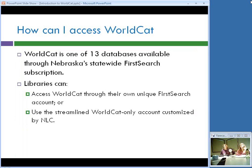How can you access WorldCat here in Nebraska? WorldCat is one of 13 databases available through Nebraska's statewide FirstSearch subscription. We subscribe to the FirstSearch base package primarily because we want everyone to have access to WorldCat. If your library has signed up for Nebraska Access, you have your own unique FirstSearch account assigned to your library, and you can access WorldCat that way. Alternatively, and this is probably the preferred method, you can access WorldCat through an account we established at the Library Commission and make available through Nebraska Access.